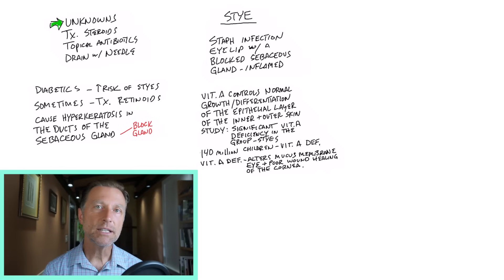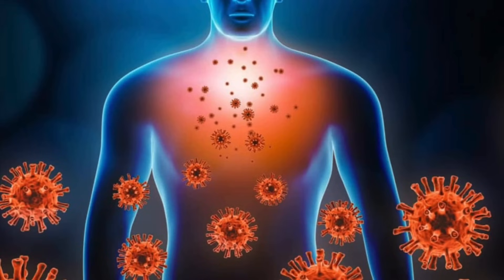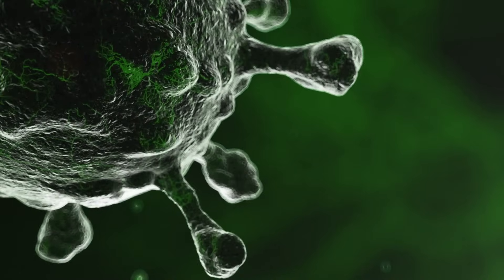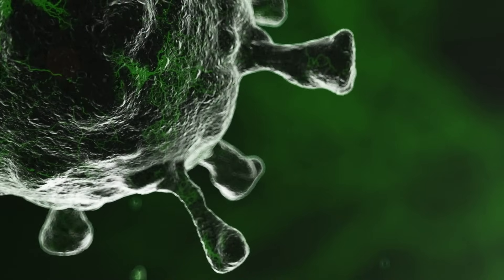Vitamin A is also intimately involved in the immune system. So when someone's deficient in vitamin A, they can be a lot more susceptible to getting an infection. Now let's shift gears to this staph infection, the staph bacteria.